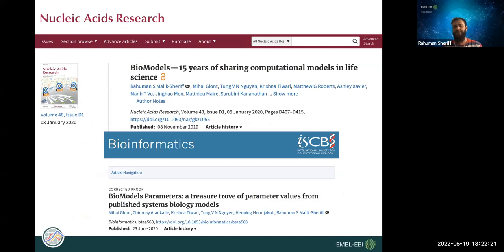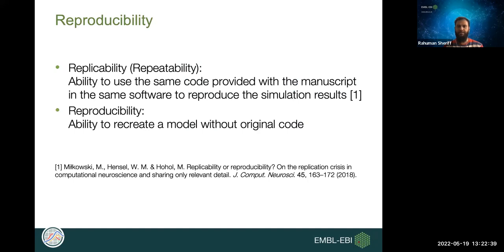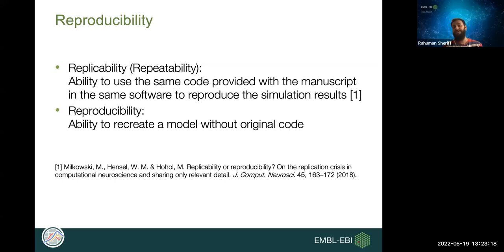We now move to the main topic: reproducibility in systems biology modeling. Two terminologies need to be clarified: replicability (or repeatability) is the ability to use the same code provided with the manuscript with the same software to repeat simulation results. Reproducibility is the ability to recreate a model without the original code — building it from scratch, running it on different software, and reproducing the simulation results. This study focuses on reproducibility, not replicability.